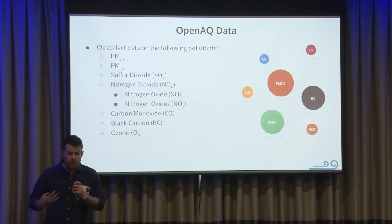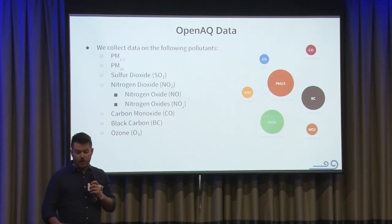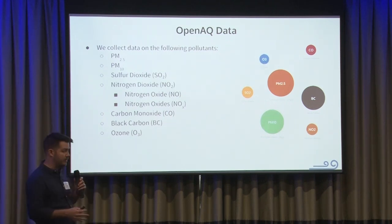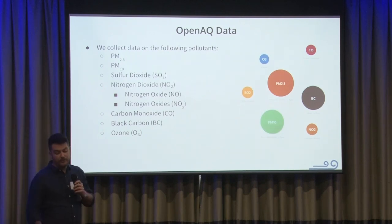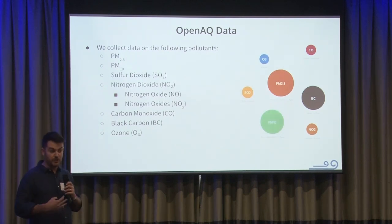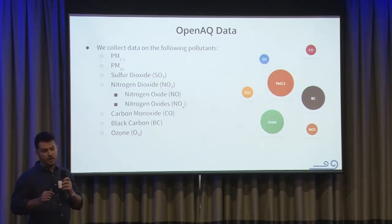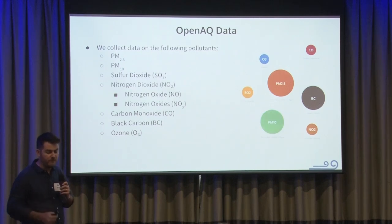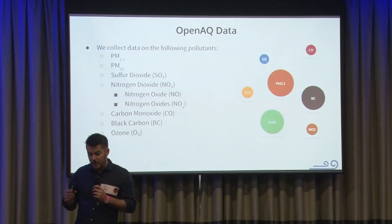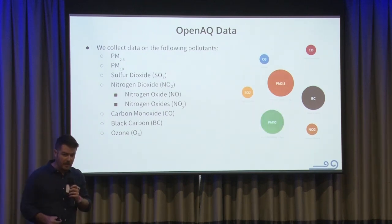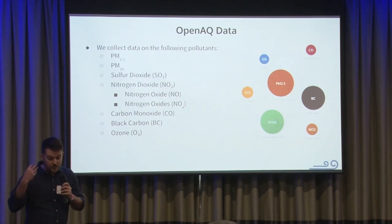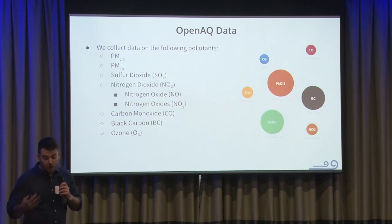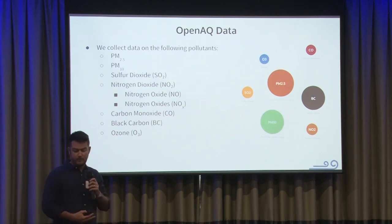To give a quick primer on what air quality data is: we primarily collect these seven main pollutants, often called criteria pollutants, which are the ones that primarily affect human health. The first two are PM2.5 and PM10 — that stands for particulate matter. The number is the size of the particle: 2.5 is 2.5 microns and smaller, and 10 is 10 microns. PM2.5 is a very dangerous form of particulate matter — it's smaller than blood cells, so it can pass through your brain membrane and causes a lot of health problems. It comes from wildfires, cars, and cigarettes.